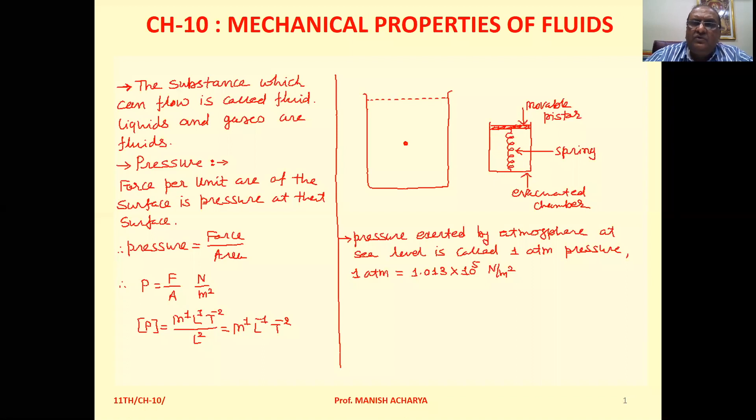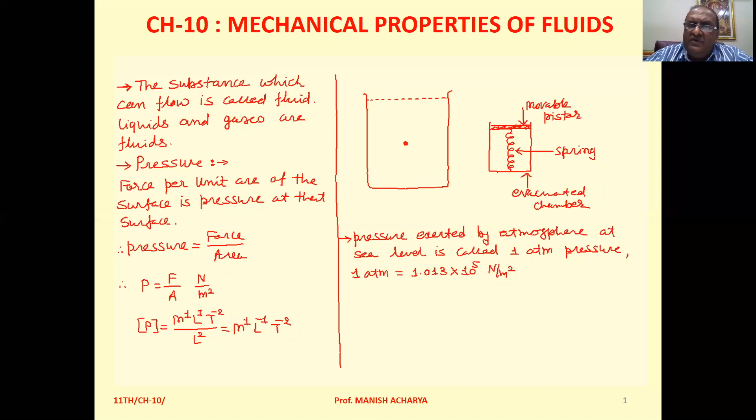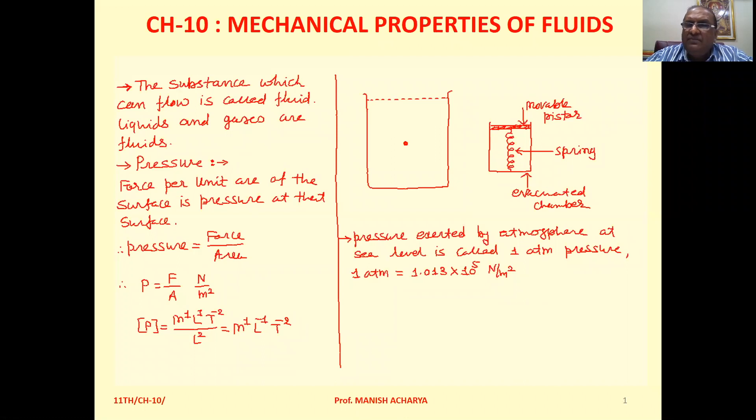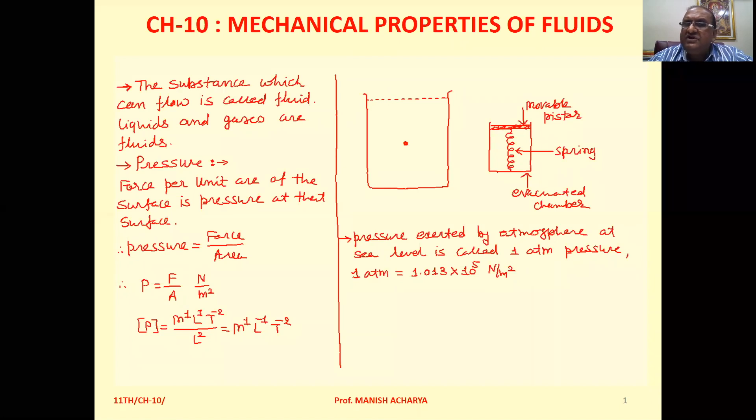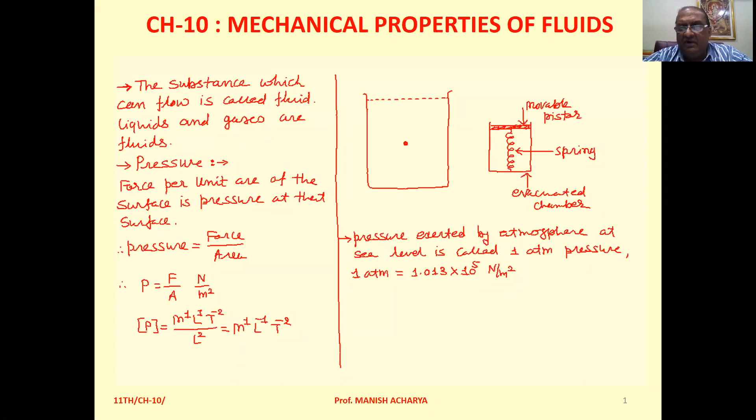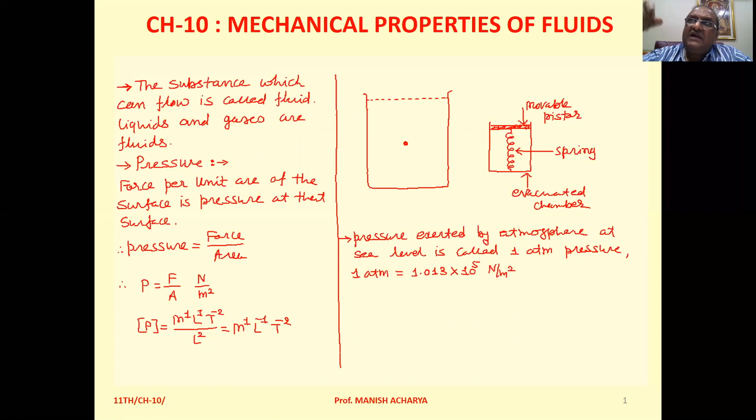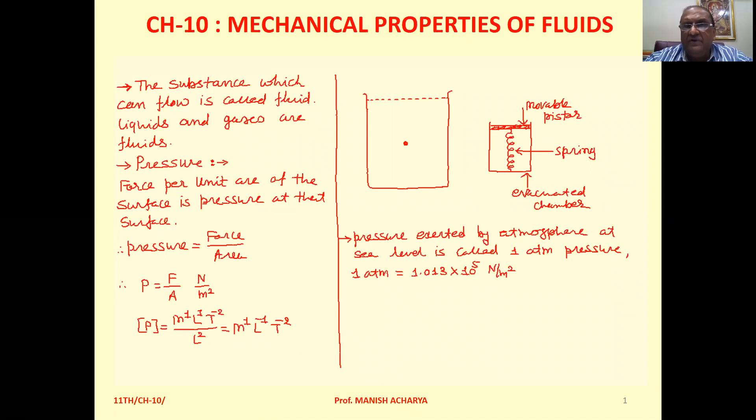There is another unit of pressure which we use frequently, that is atmospheric pressure, written as atm. One atmospheric pressure is 1.013 × 10^5 Pascal or 10^5 Newton per meter square. One atm means the pressure exerted by atmosphere at sea level.